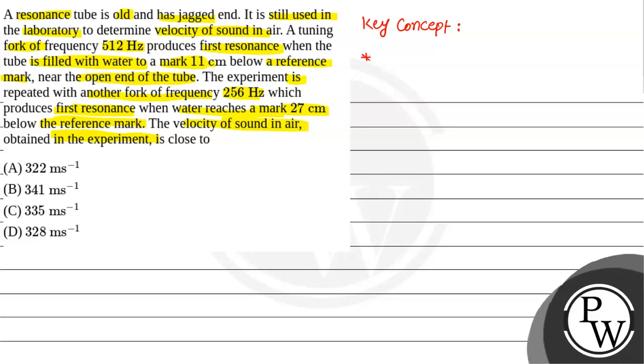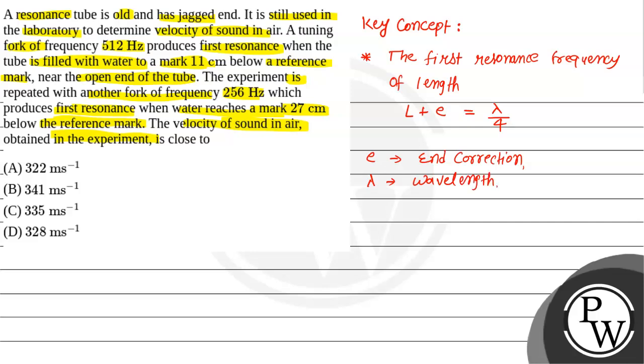The first concept we will see here is the first resonance frequency length. So here we can write the first resonance frequency of length L plus e is equal to lambda divided by 4. This framework comes from a column. This is wavelength and this wavelength can be further written like this: